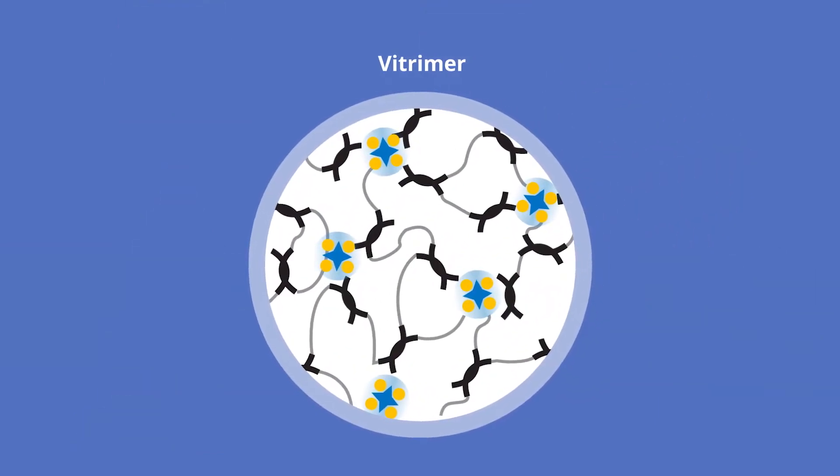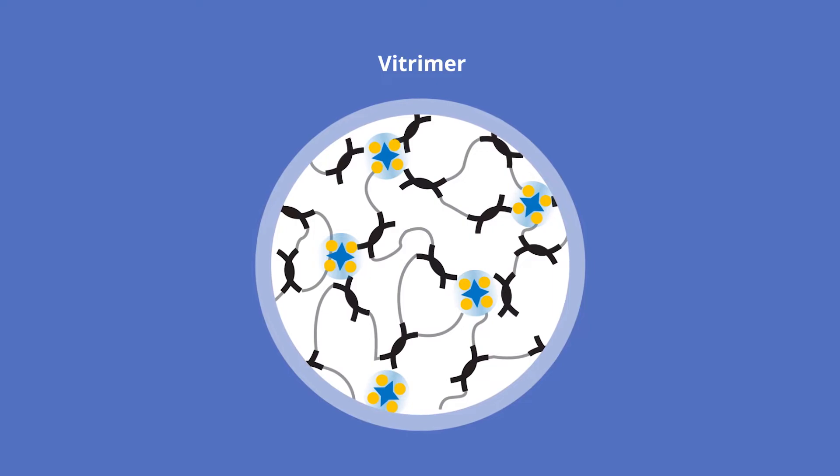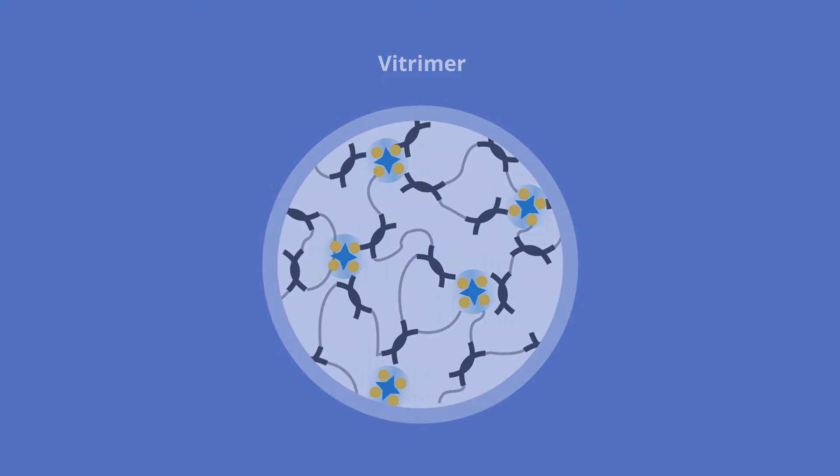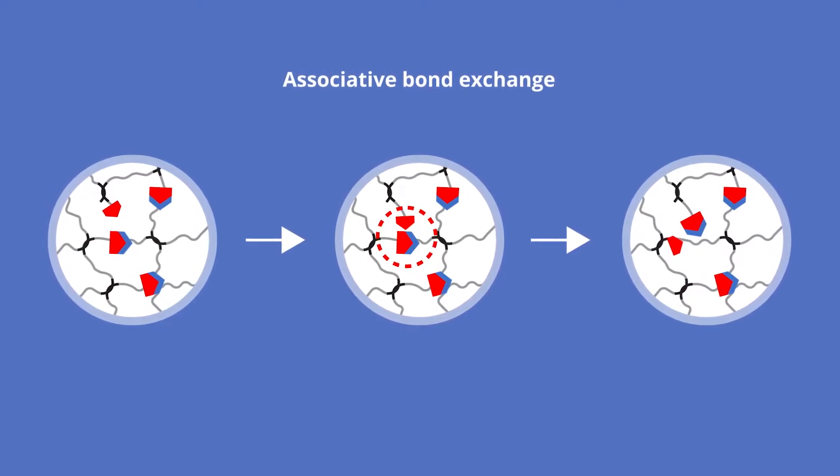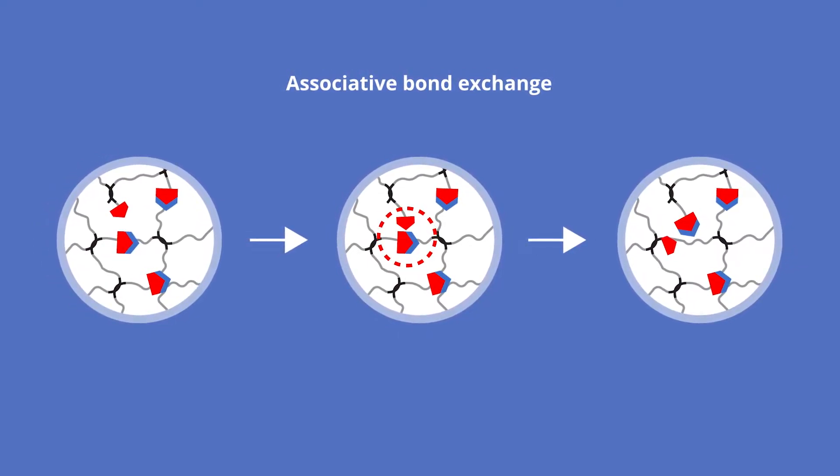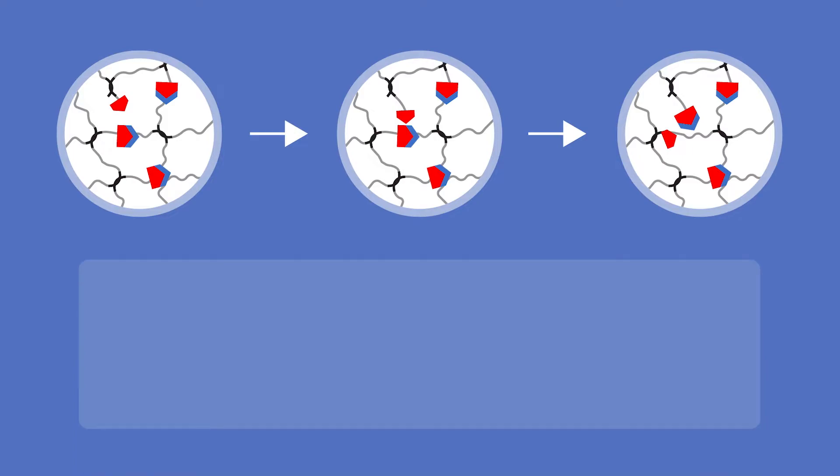Vitremers are large networks of interconnected or cross-linked polymer molecules. The chemical bonds in vitremers can undergo reversible exchange under suitable external stimuli without bond dissociation and reassociation. This unique feature imbues vitremers with many attractive properties, including high recyclability, healing capabilities, and reprocessibility.